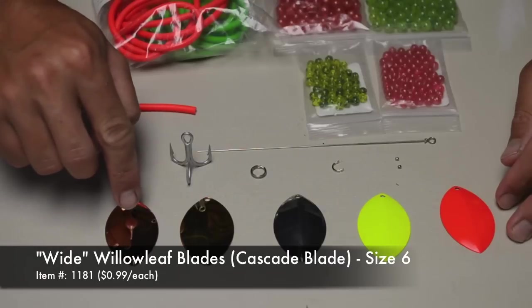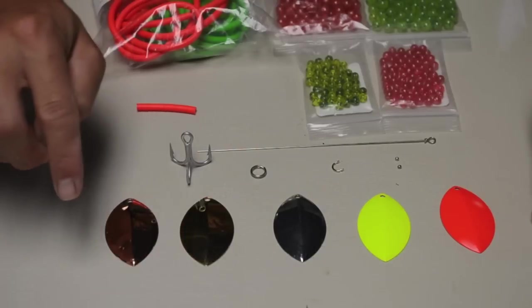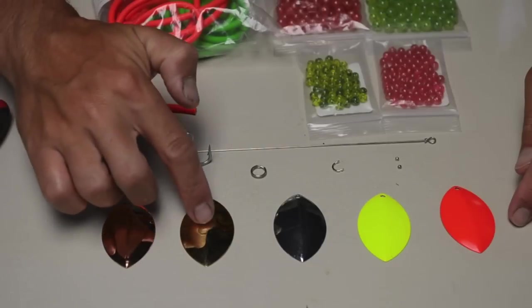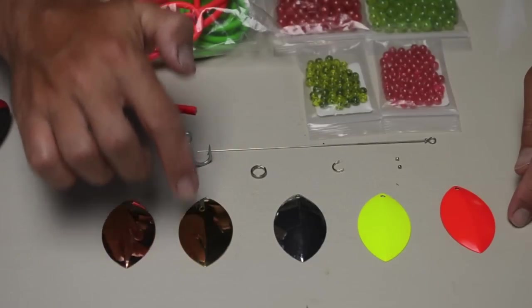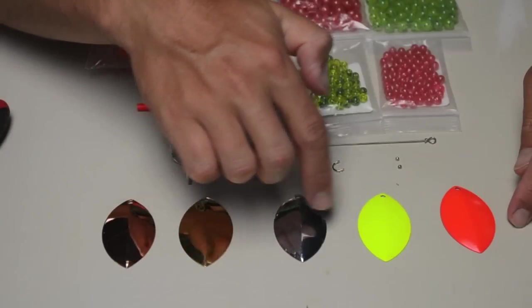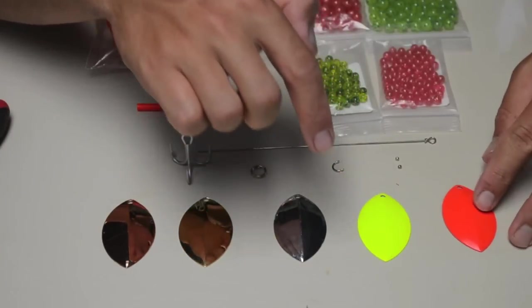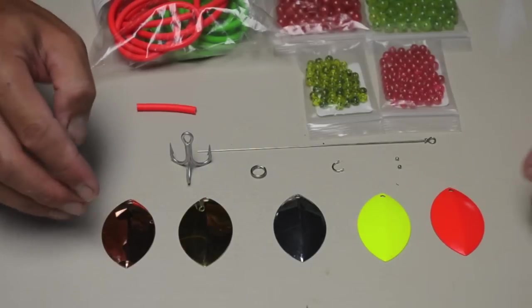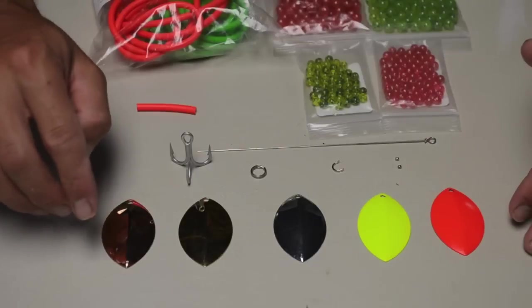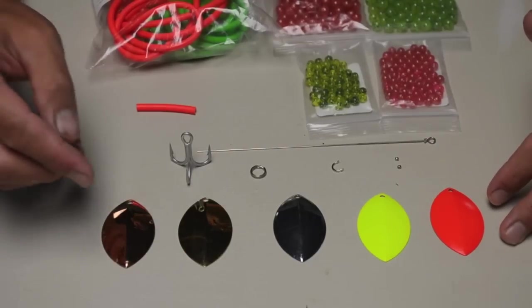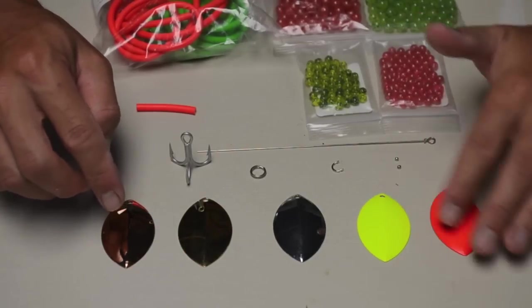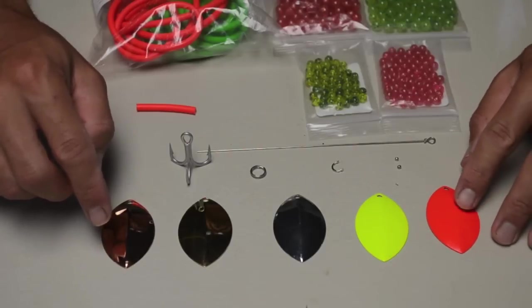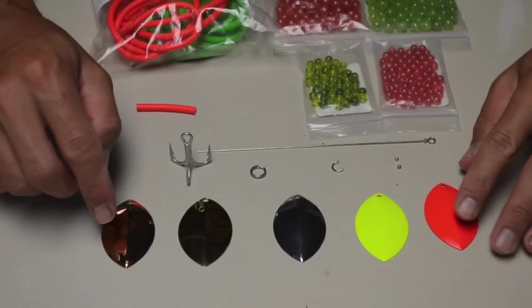They come in a lot of different colors and platings but I prefer these five: copper, a gold plated, a silver lacquer plated, chartreuse and a fluorescent red. You can customize these in any kind of way you would like. Sometimes I'll put metallic tape, greens and blues on there or paint even a green or blue dot on the chartreuse or paint these fluorescent reds half white.